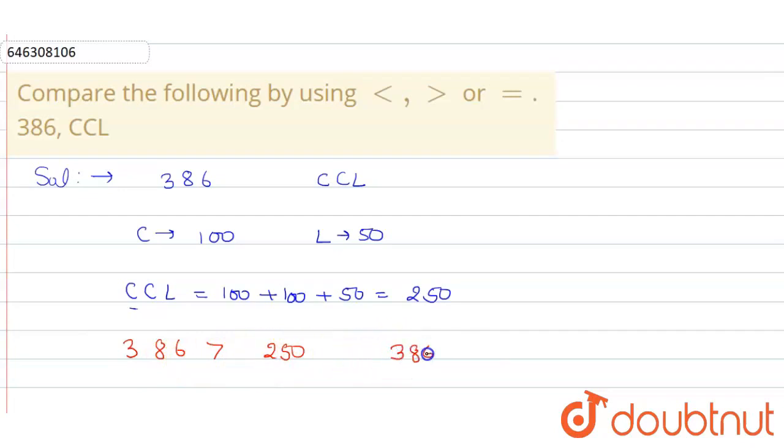That is, 386 will be greater than CCL. So this will be my final answer. Thank you.